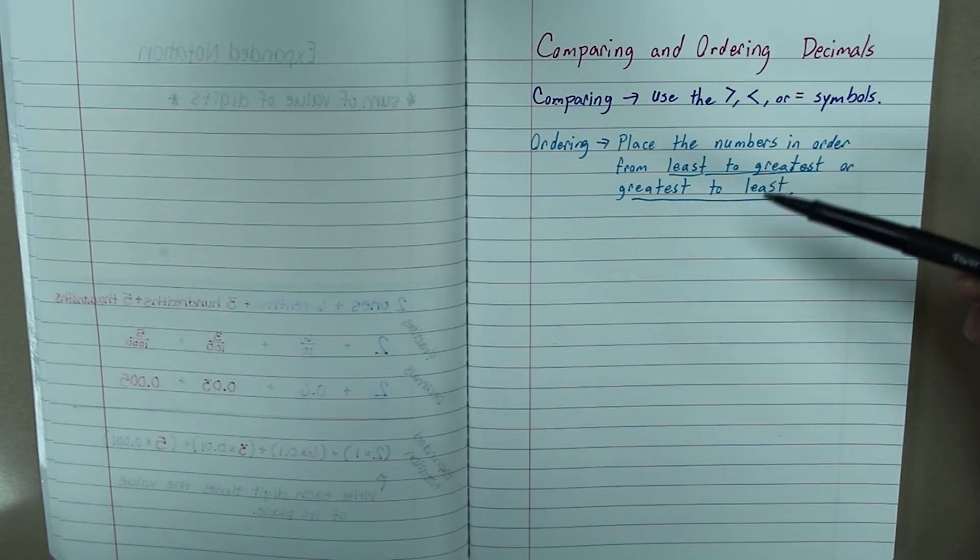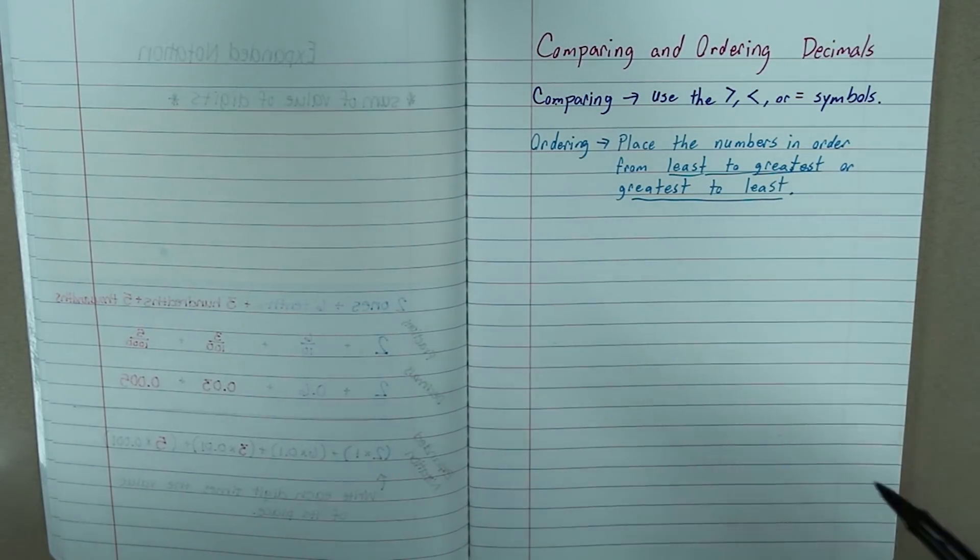So, the difference between comparing and ordering is comparing is going to be generally between two numbers, whereas ordering is going to be more than two numbers. And it can be a large list of numbers, it's just going to put them in order from least to greatest, or greatest to least.